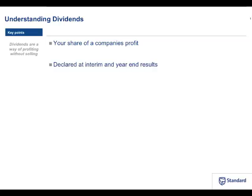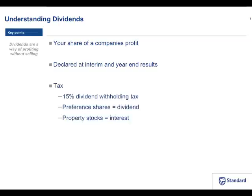Dividends get declared with the results at interim and year-end stage, so every six months any dividend — if at all — will be declared with those results announcements, telling you what the dividend is and the important dates around it. There are tax considerations: we have a dividend withholding tax that came into effect in April 2012, replacing secondary tax on companies. It is a 15% dividend withholding tax paid directly to National Treasury. So if a company declares a one rand dividend, you will receive 85 cents — that other 15 cents goes directly to Treasury.